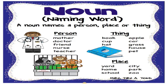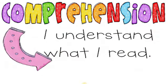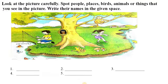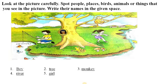Now come to the comprehension question to check ki aapko kitna samajh mein aaya. Question number 1: Look at the picture carefully. Spot people, places, birds, animals, or things that you see in the picture. Write their name in the given space. The answers are: boy, tree, monkey, river, girl.